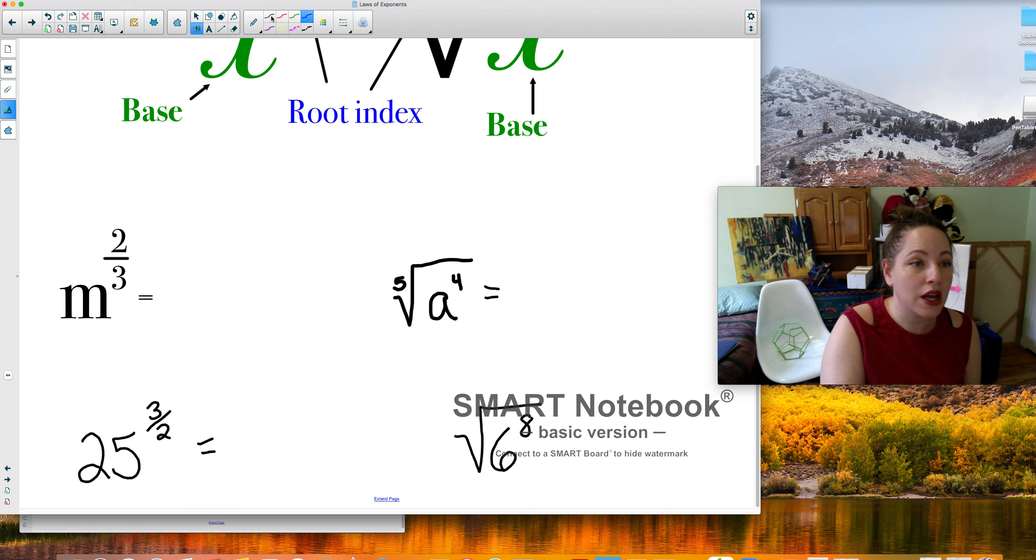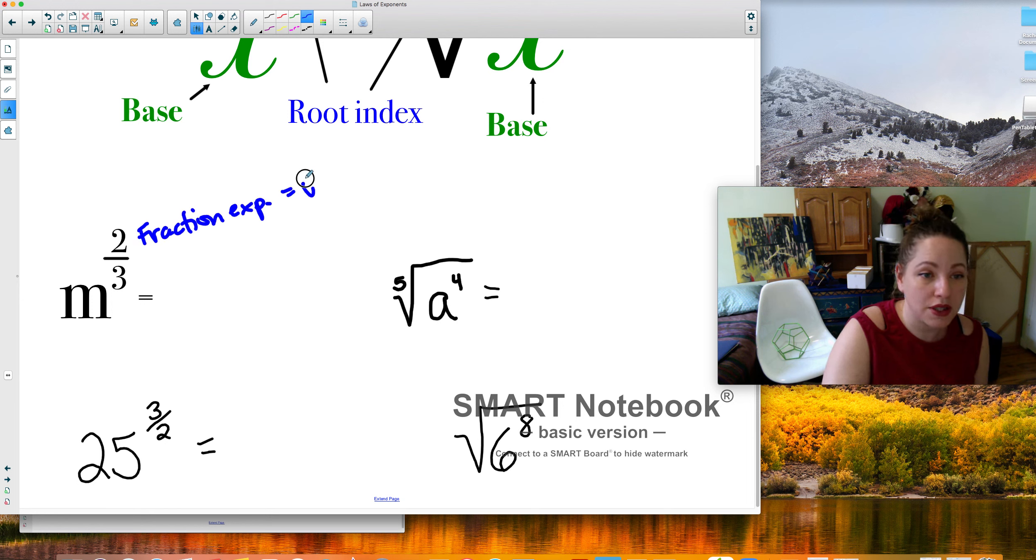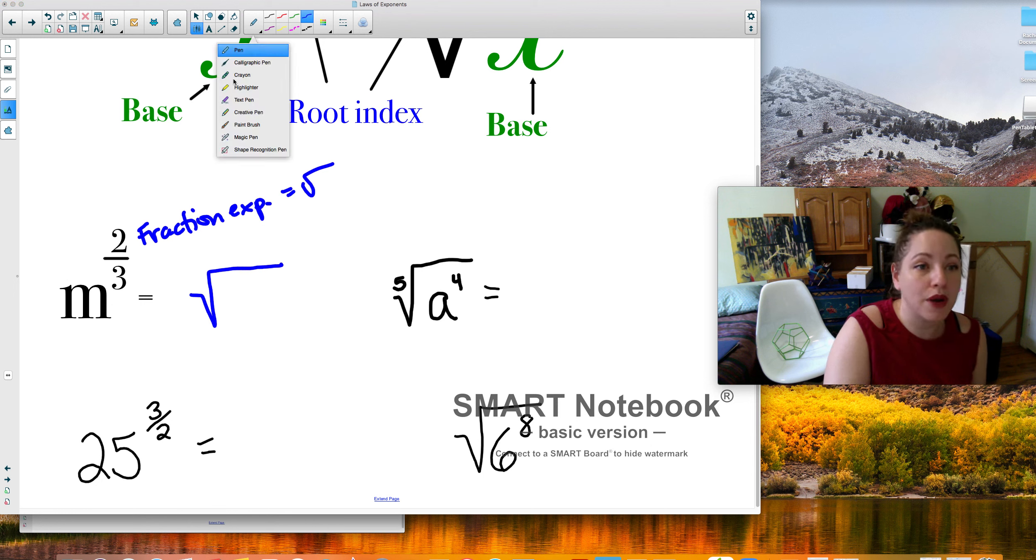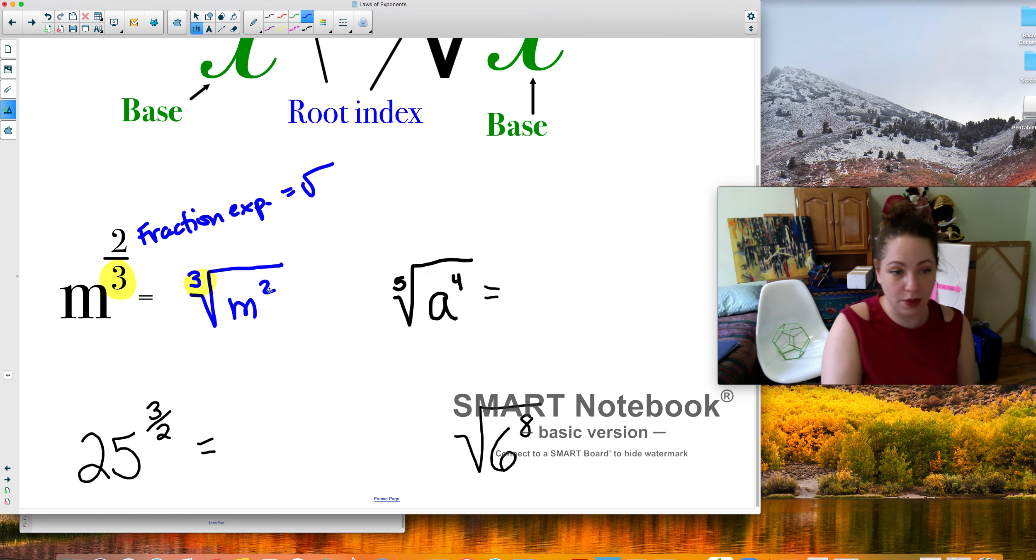So if we have m to the 2 thirds, it's going to become a root because it's a fraction. So fraction exponent, fractional exponent means that it's going to be a radical. So I rewrite it as a radical. The bottom number is going to be my root. So that's going to be a 3 out here. And then m squared because the top number is my exponent. You may be like, why would I need to rewrite it like this? Well, being able to move back and forth can help us a lot. And let's see some examples of how it can help us.